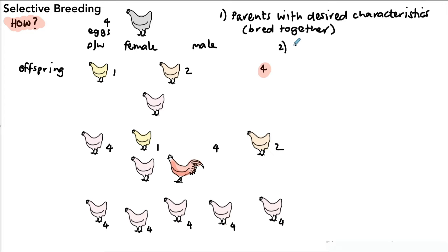And this is done with plants as well as animals, but we can make a list of steps of how this is done. So we've got first, parents with desired characteristics are bred together. Second step is the offspring with desired characteristics are bred together again.